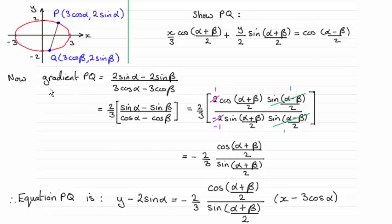First of all I found the gradient PQ in the usual way, difference between the y coordinates divided by the difference in the x coordinates, and then pulled out a factor of two thirds here. And then I had to use the factor formula to simplify sin alpha minus sin beta, you see this here, find it in the formula book.